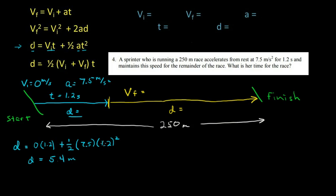I'm not putting in all of the units that cancel out just because of space and time. So distance is 5.4 meters. So now we can figure out this other distance. That's 250 minus 5.4, and that's going to equal 244.6 meters. So this is 244.6 meters.